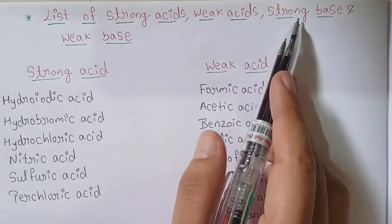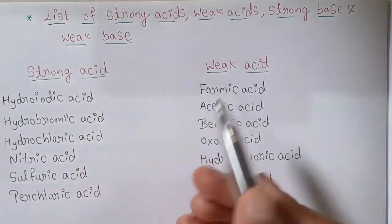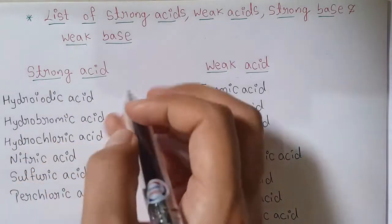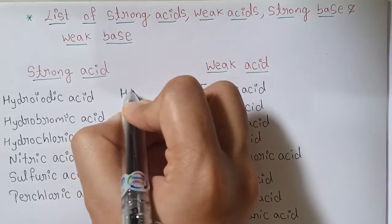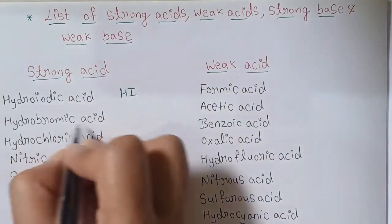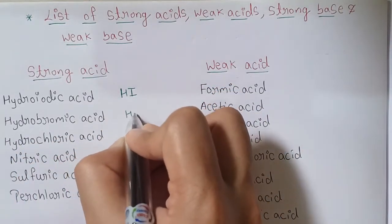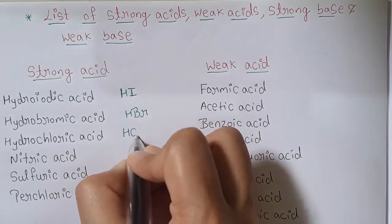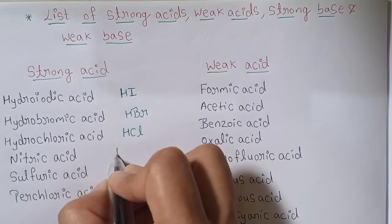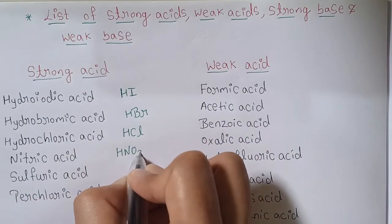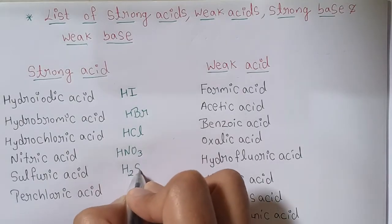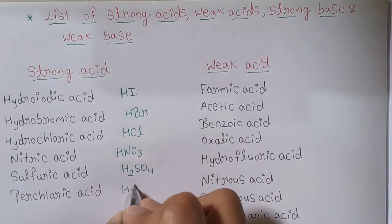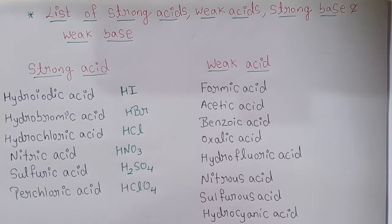List of strong acids, weak acids, strong bases, and weak bases with chemical formulas. Strong acids: hydroiodic acid (HI), hydrobromic acid (HBr), hydrochloric acid (HCl), nitric acid (HNO3), sulfuric acid (H2SO4), and perchloric acid (HClO4).